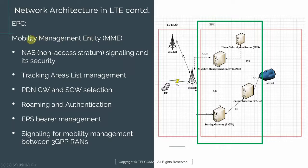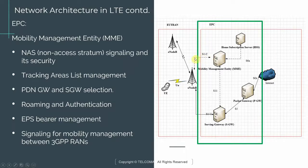The first network element we briefly touched on in the previous slide was the Mobility Management Entity (MME). This is the box that talks to the eNodeB, and as you can see, this connection is dotted or dashed — meaning it is a signaling connection, as we discussed in the previous slides.